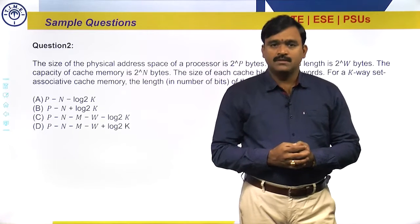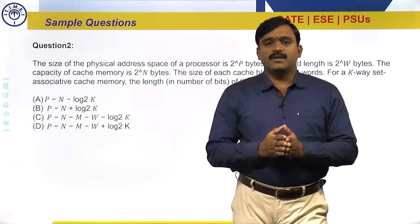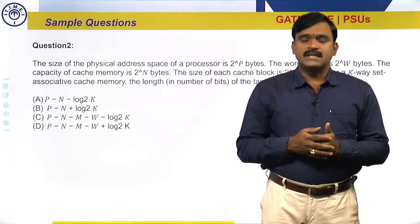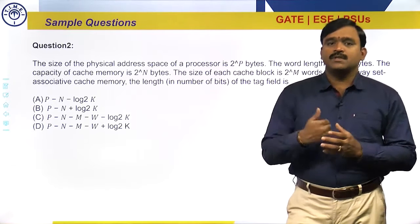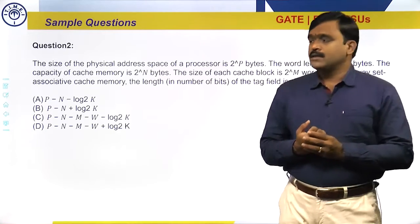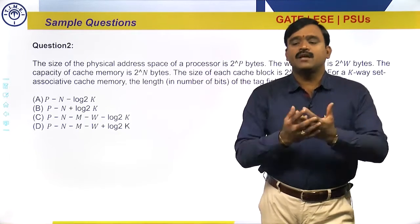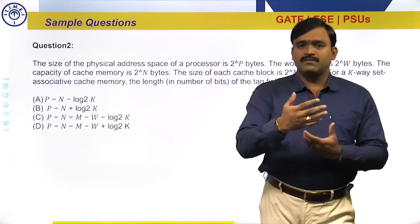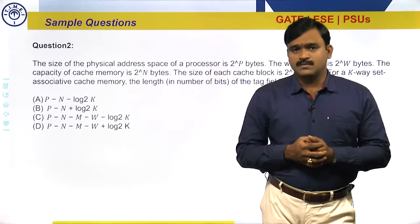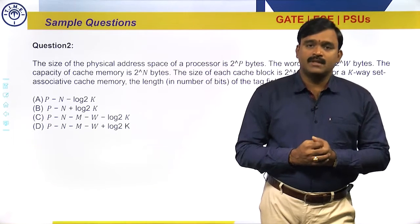Let us discuss one more question related to cache mapping techniques. In cache memory there are different types of mappings: direct mapping, associative mapping, and set-associative mapping. Many questions came in previous GATE exams related to set-associative mapping. This is one such previous GATE question. Solving previous GATE papers and important questions from textbooks — like Morris Mano's textbook — is helpful, as many questions are selected or directly given from there.